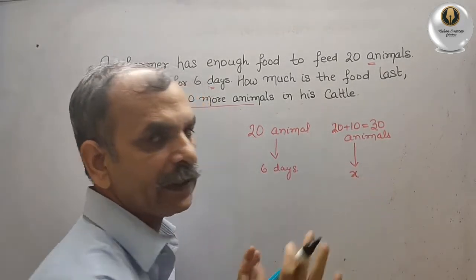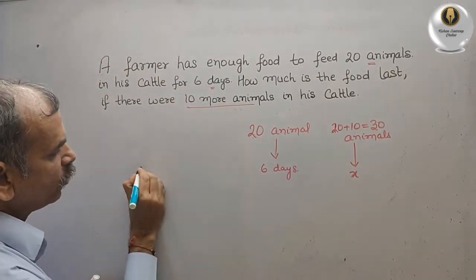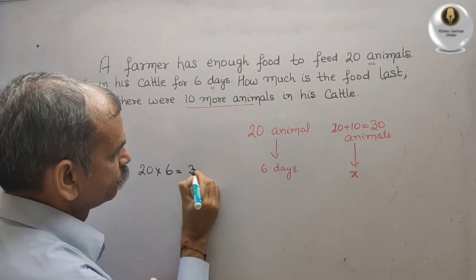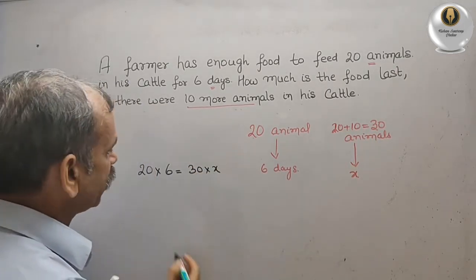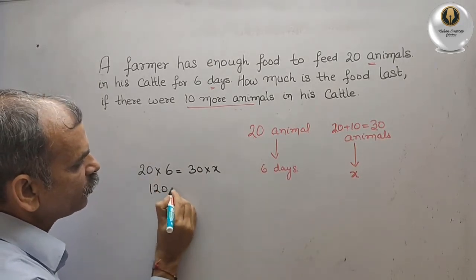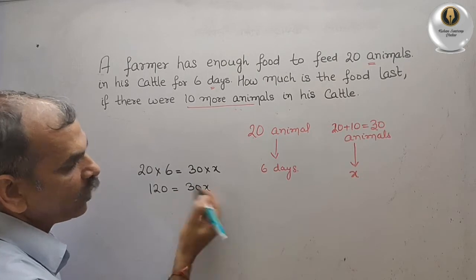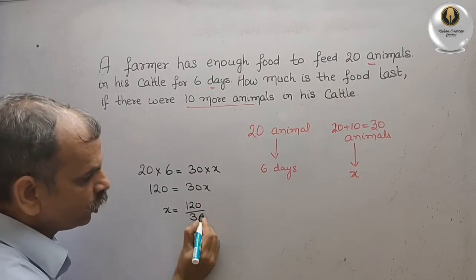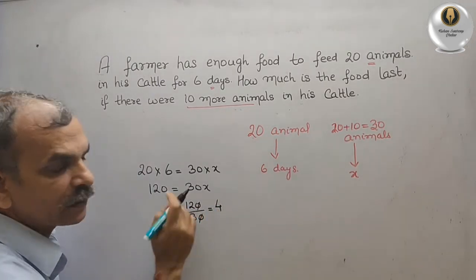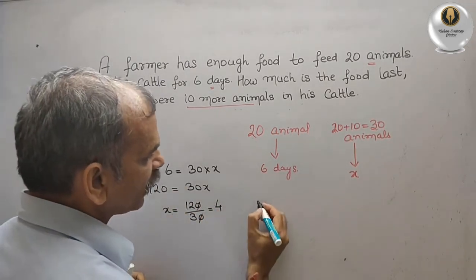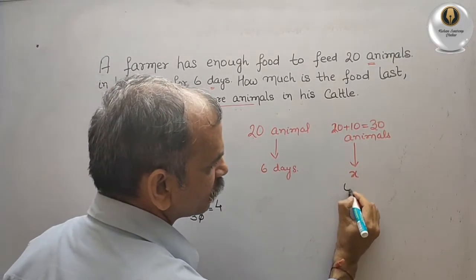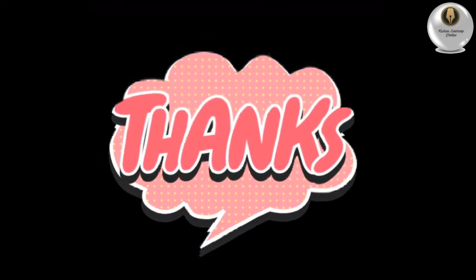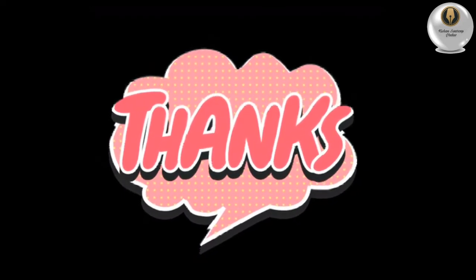So here we will put X. For animals and days — zeros cancel out. Now we can say X is 4 days. X is your answer for the food duration.